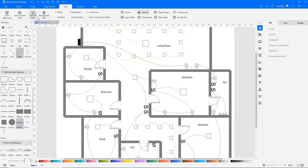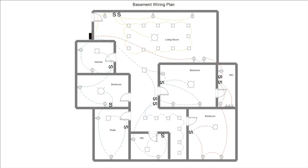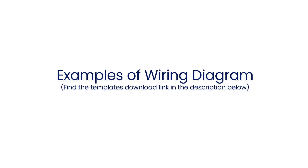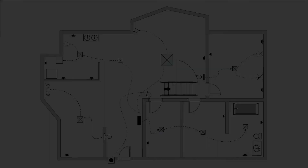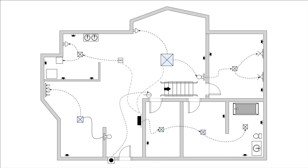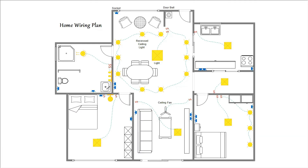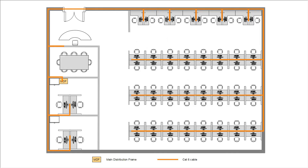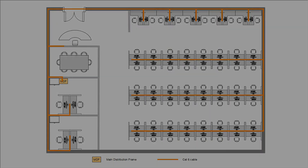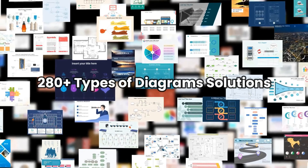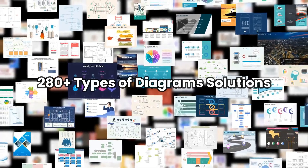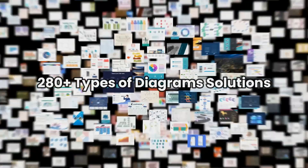Uncheck Gridlines under the View tab and click on the From Beginning icon to preview the diagram in a single frame. Now let's see a few examples of wiring diagrams that are available in eDraw Max. Similarly, eDraw Max has numerous diagram examples to use as resources. Thanks for watching and don't forget to subscribe to our channel for more eDraw Max videos.